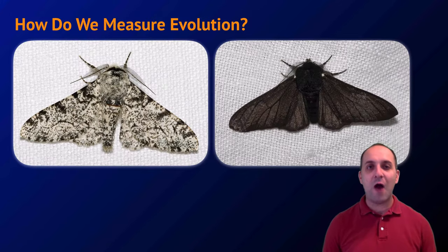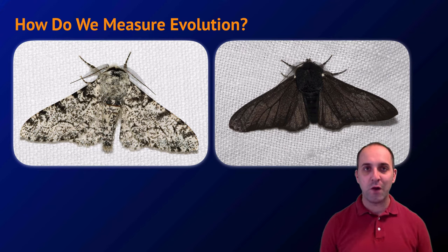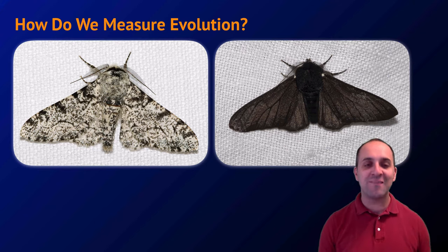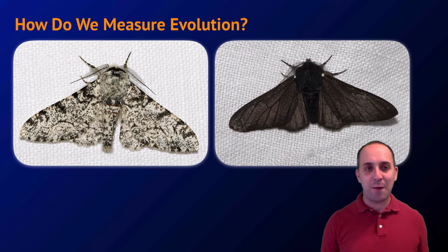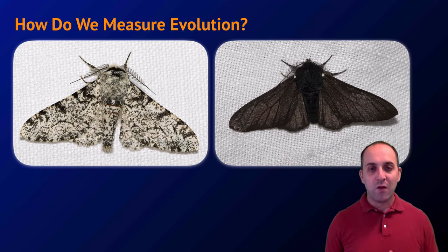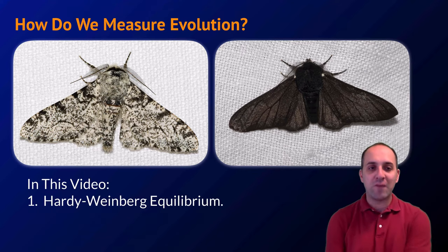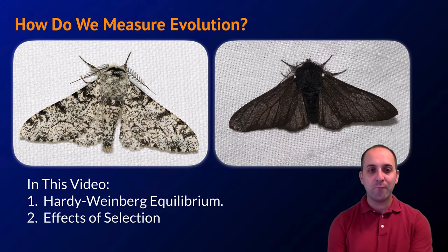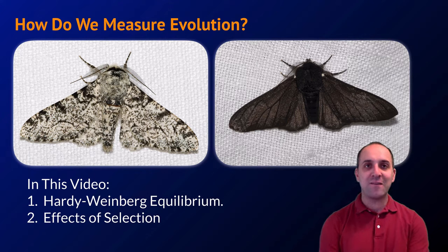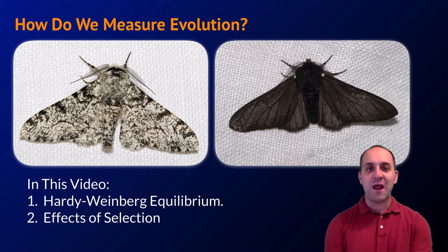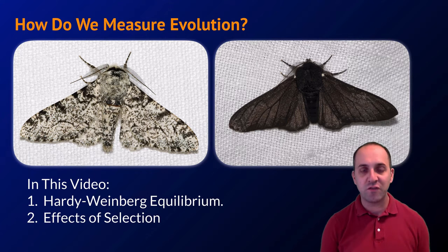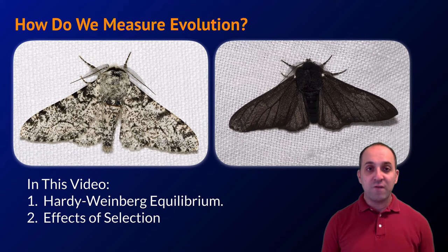This gets us into the notion of how do we measure evolution — how do we know it's happening? It's not going to be useful science if we can't measure it. We're going to talk about Hardy-Weinberg equilibrium and the effects that selection can have on a population and how that changes the distribution of phenotypes.